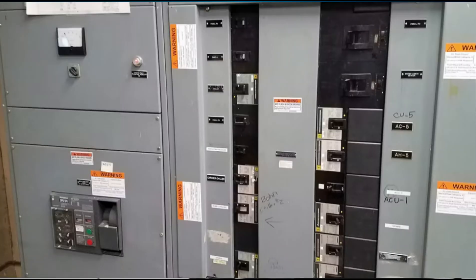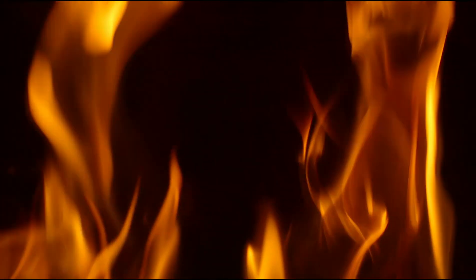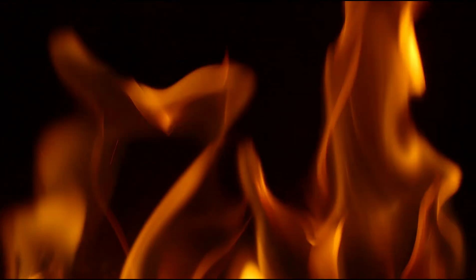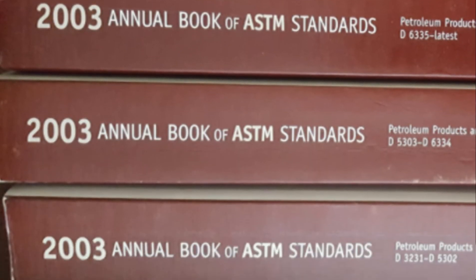Part of this is ensuring that arc flash hazard equipment labels are in place and that the employee has the information necessary to select the appropriate PPE based on the label. Incident energy is defined as the amount of thermal energy impressed upon a surface at a certain distance from the source, generated during an electrical arc event. It is typically expressed in calories per centimeter squared in the United States, and in joules per centimeter squared in many other parts of the world. Incident energy calculations are based on available thermal energy only and do not calculate the severity of other hazards. ASTM International, formerly known as the American Society for Testing and Materials, is an international standards organization that develops and publishes voluntary consensus technical standards for a wide range of materials, products, systems, and services.